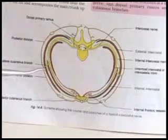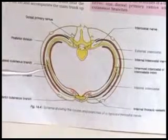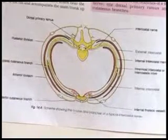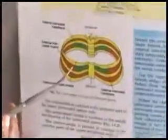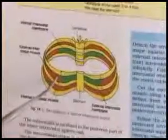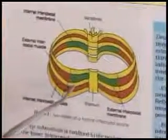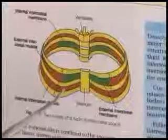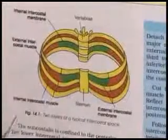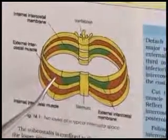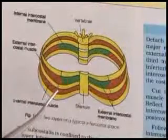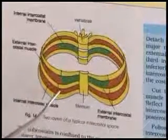Action: The intercostal muscles prevent bulging in of the intercostal space during inspiration and prevent their bulging out during expiration. The external intercostal acts chiefly during inspiration, and the other two act during expiration.